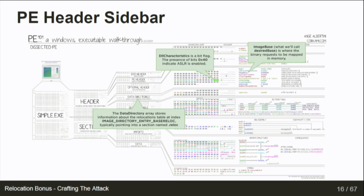Finally, there are the data directories. Specifically, there's an offset called IMAGE_BASE_RELOC. The data directory is basically an array of pointers and sizes to different pieces of data the loader needs. We're interested in the reloc index, which points to the relocations table.